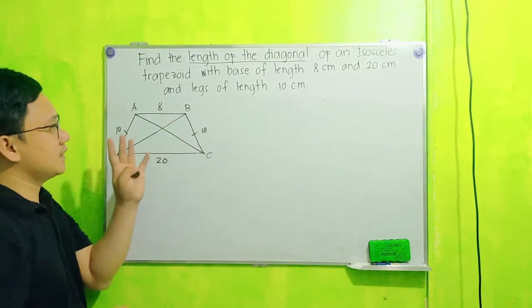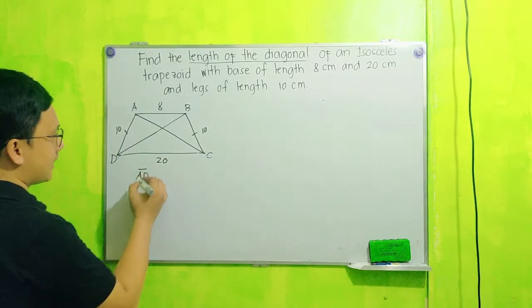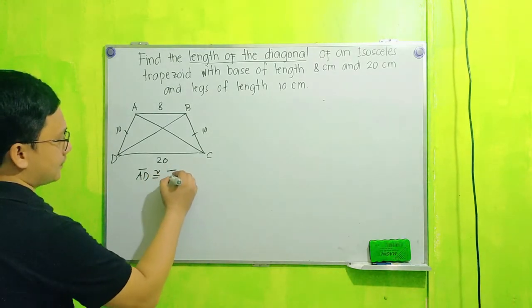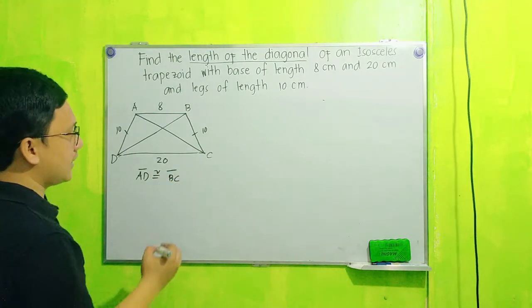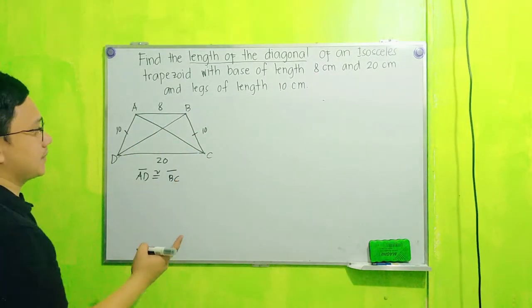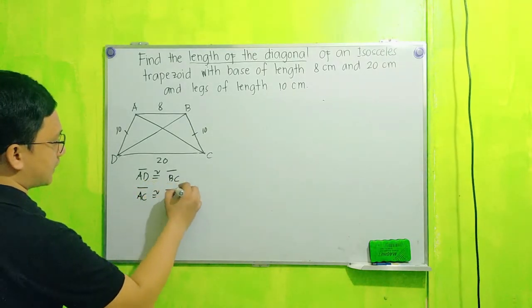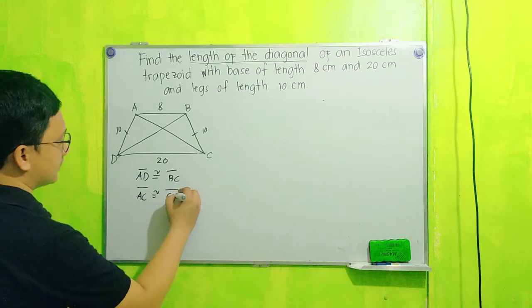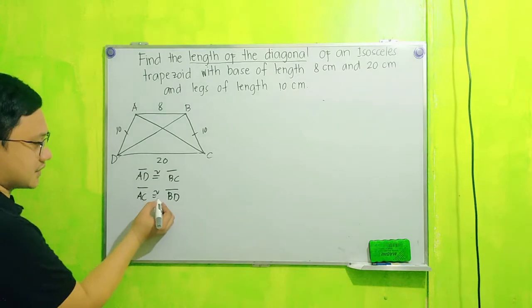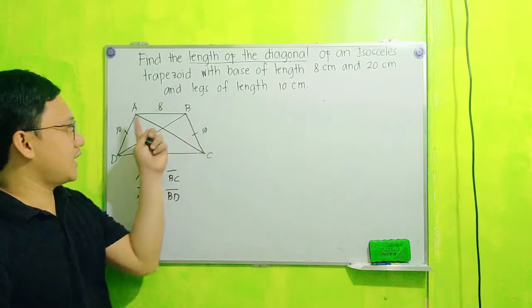Since this is an isosceles trapezoid, segment AD is congruent to segment BC. And yung diagonals po natin ng isosceles trapezoid ay congruent. So ibig sabihin, segment AC is congruent to segment BD, or AC is equal to BD. Now we are going to solve for the length of the diagonal.